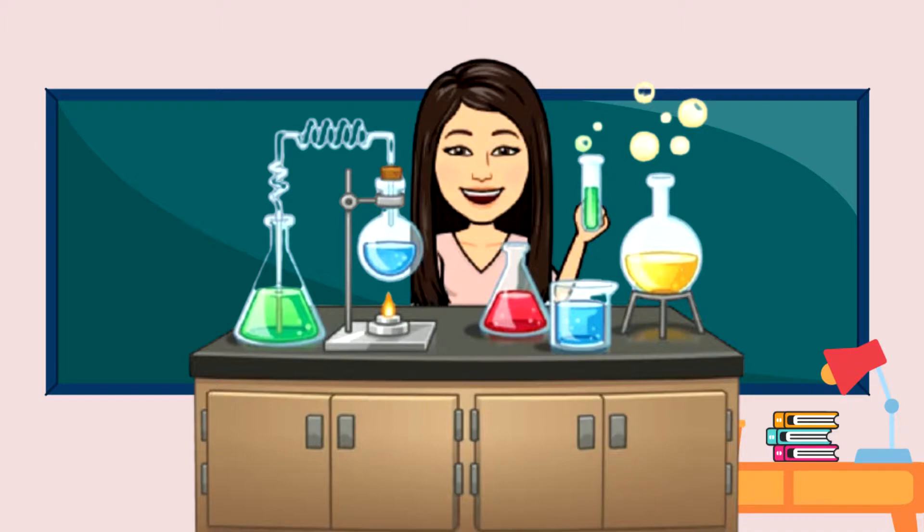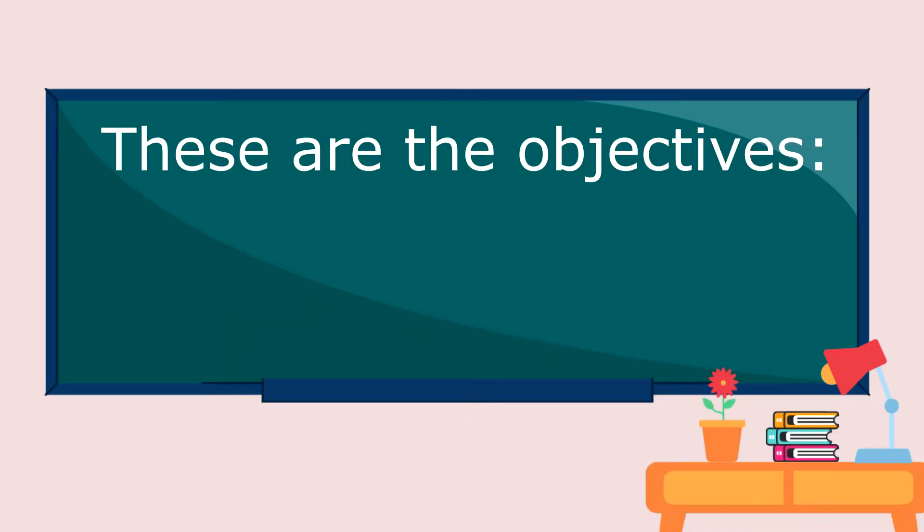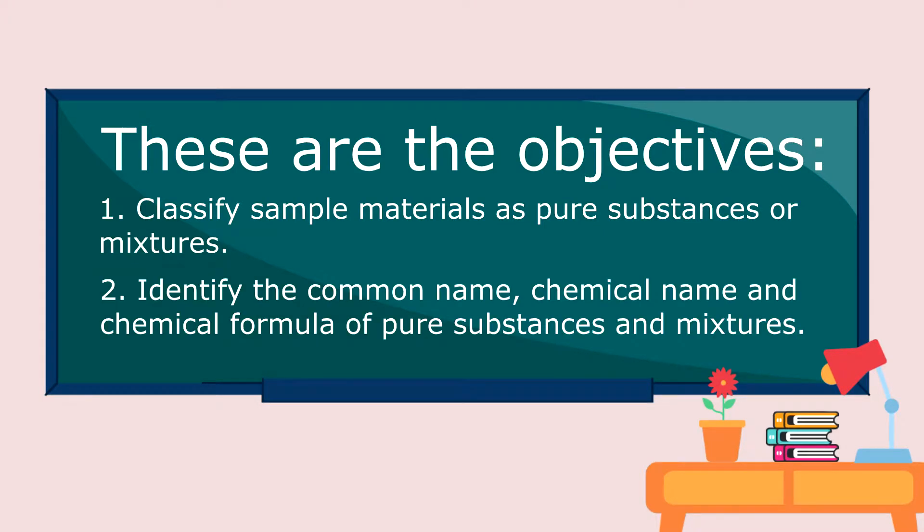Okay, let us now proceed with our next lesson. These are our objectives. One: Classify sample materials as pure substances or mixtures. Two: Identify the common name, chemical name, and chemical formula of pure substances and mixtures.